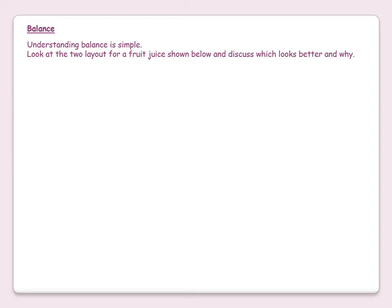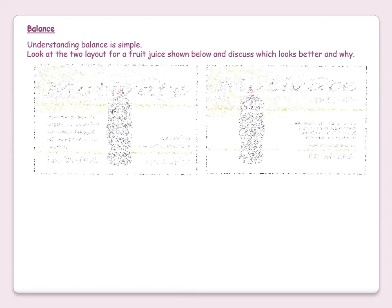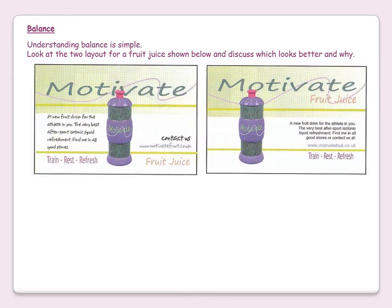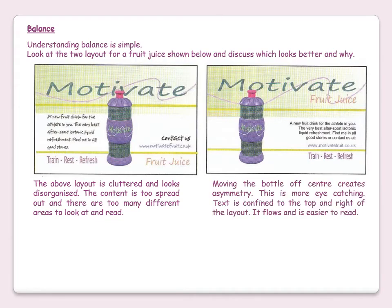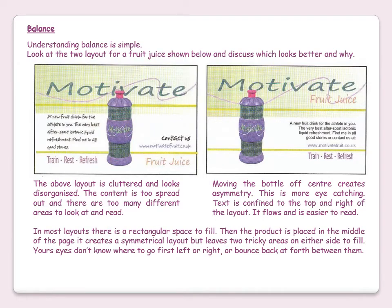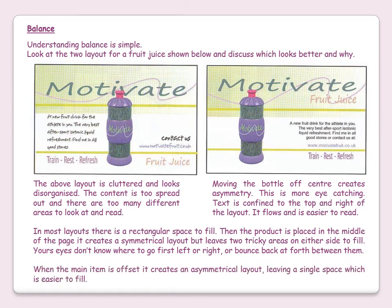Understanding balance is simple. The layout for a fruit juice is cluttered and looks disorganised. The content is too spread out and there are too many different areas to look at and read. Your eyes don't know where to go because the bottle sits in the middle of the page. Moving the bottle off-centre creates asymmetry, which is more eye-catching. Text is confined to the right and top of the layout and flows, making it easier to read. When the product is placed in the middle, it creates a symmetrical layout but leaves two tricky areas on either side to fill. When the main item is offset, it creates an asymmetrical layout leaving a single space which is easier to fill.